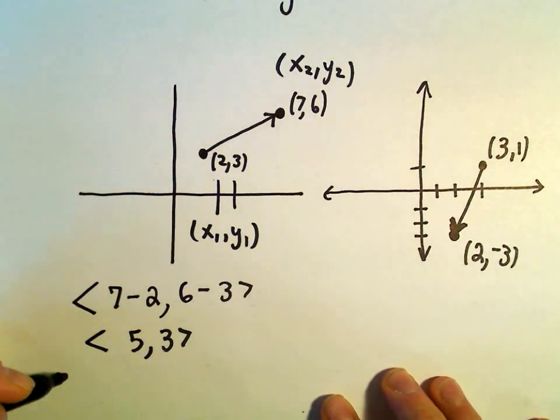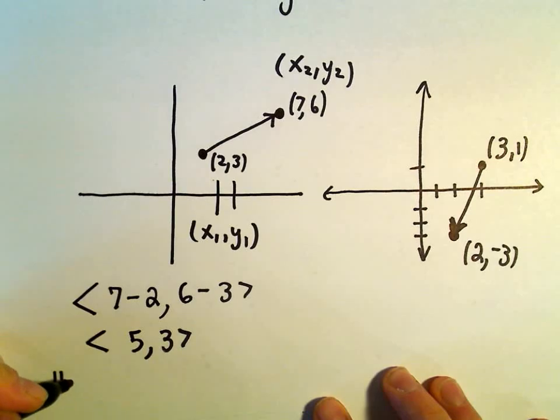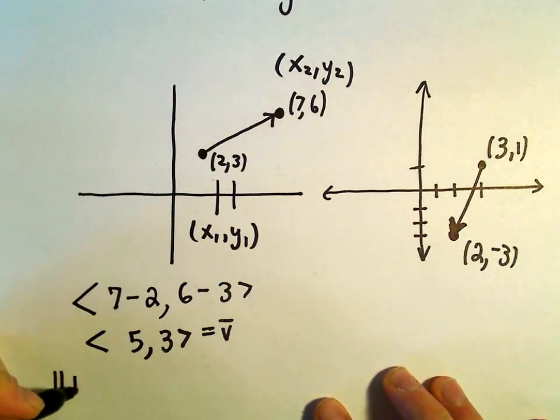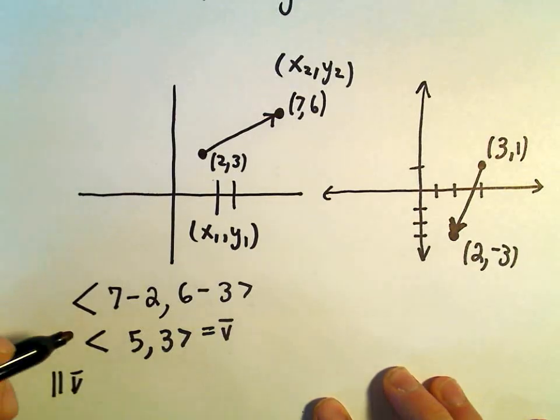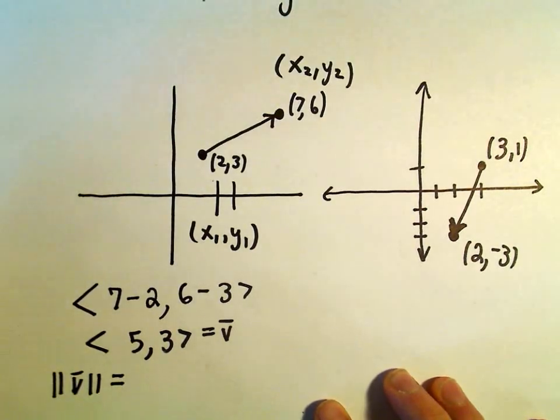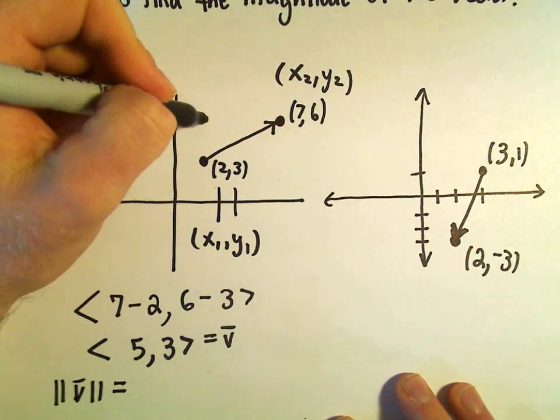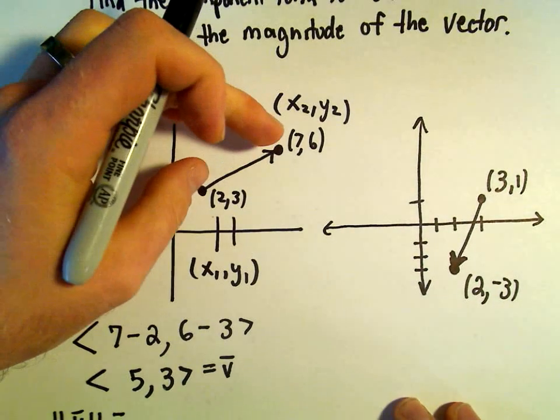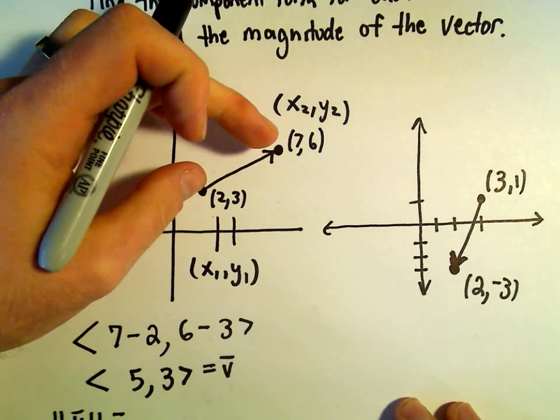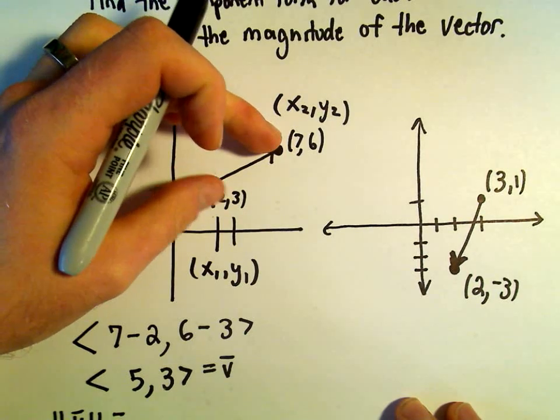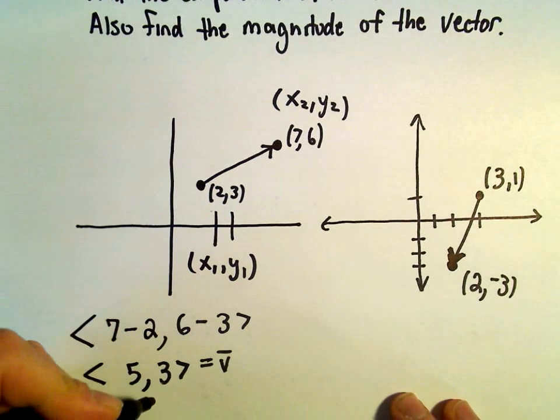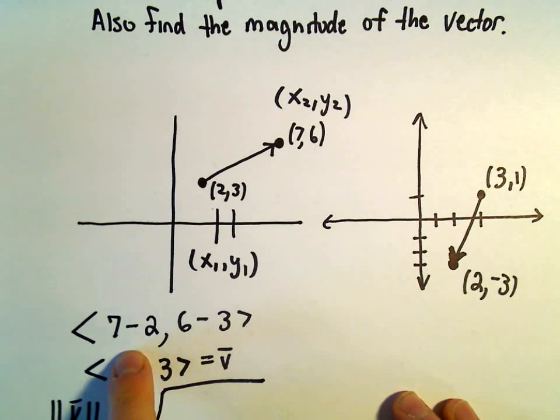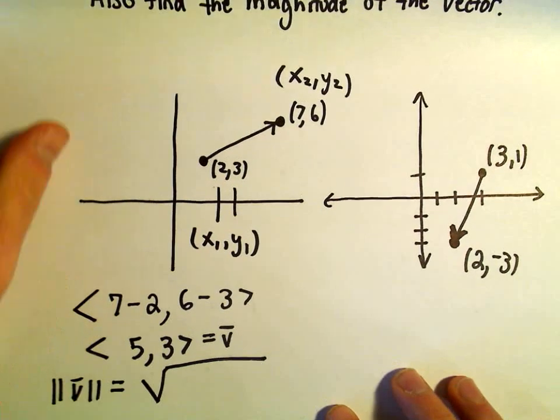To get the magnitude, so if we call this vector v, the magnitude is just the length of the vector. You can do two things. You can just immediately use the distance formula—you subtract the x coordinates, square them, you subtract the y coordinates, square them, add them together, and square root. Equivalently, we've already done that by finding the vector form. We've already subtracted the x coordinates and the y coordinates.